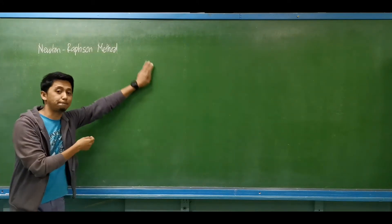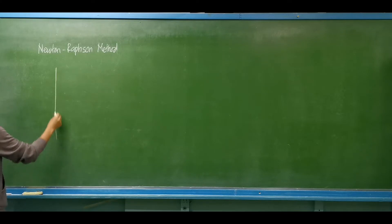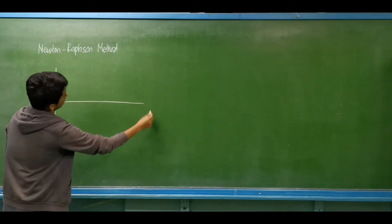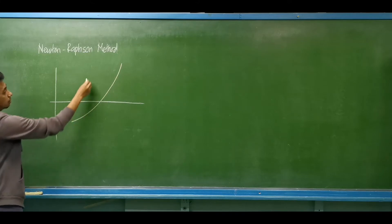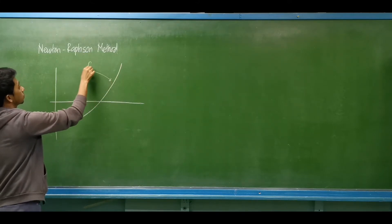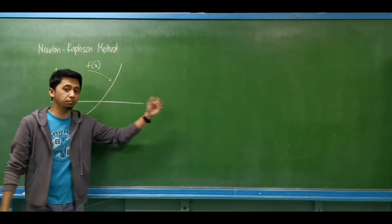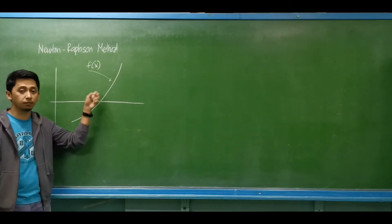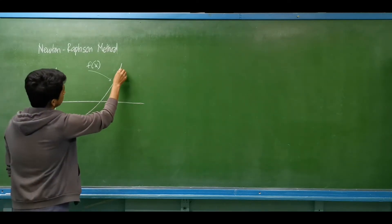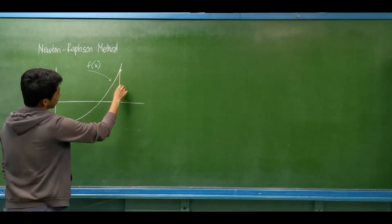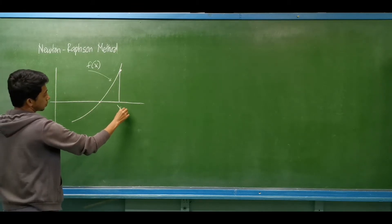We proceed to the Newton-Raphson method. So for example, we have this function — let's say this function is f of x. Using this method, we may assume one value near to the root of the given function. We are to assume a value of x near the actual root of the given function at x sub 0.